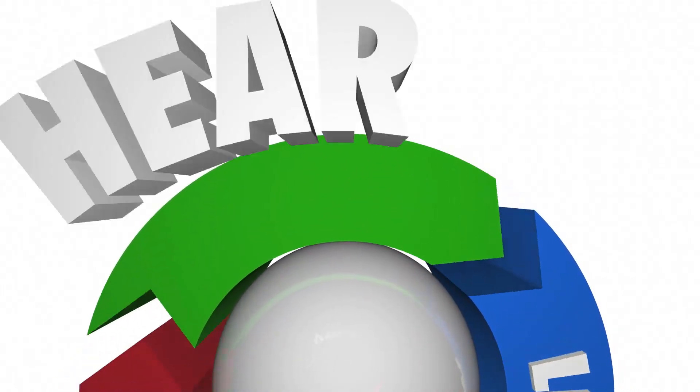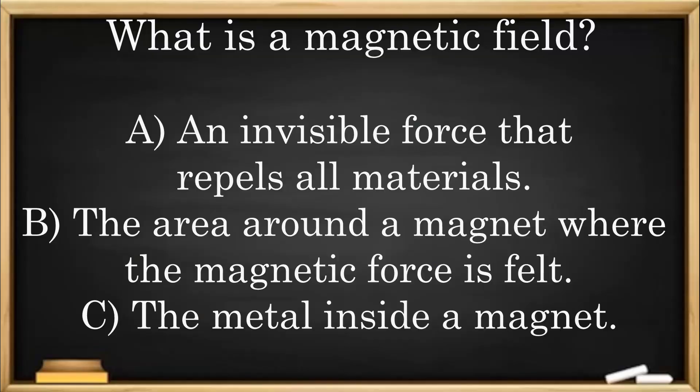Check for understanding. What is a magnetic field? A. An invisible force that repels all materials. B. The area around a magnet where the magnetic force is felt. C. The metal inside a magnet.